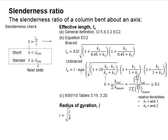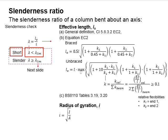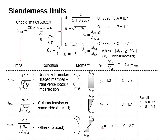To determine the slenderness of the column, the slenderness ratio is to be checked against the slenderness limit. The column is considered a short column when the slenderness ratio is less than the slenderness limit, whereas when it is equal to or greater than the slenderness limit, the column is considered slender.